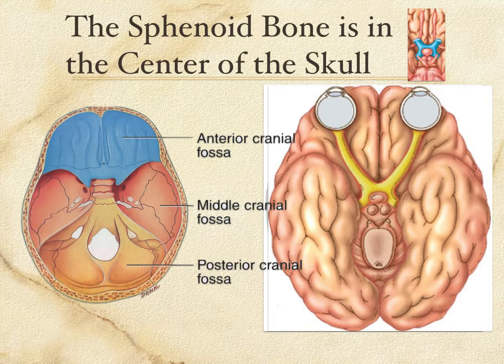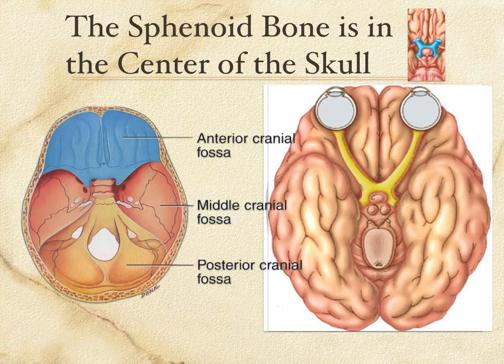Going back to the sphenoid bone: you can see it right there in the center. Part of it is up in the anterior cranial fossa — the lesser wings are colored blue there — and the greater wings are down in the middle cranial fossa, colored orange. So the sphenoid bone sits right dead center in the skull. That's seven out of the eight bones.